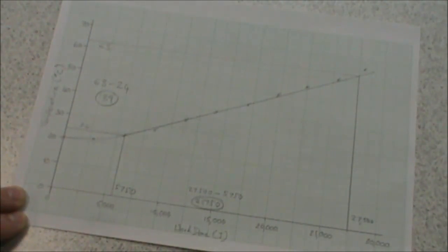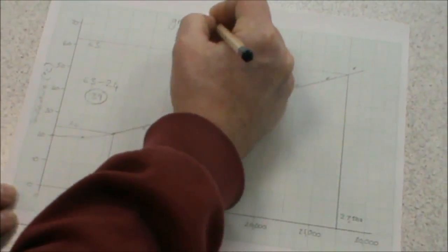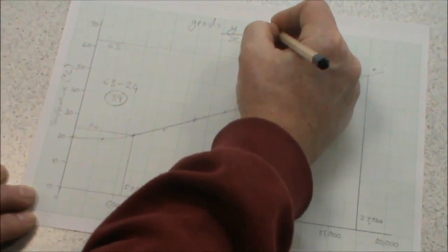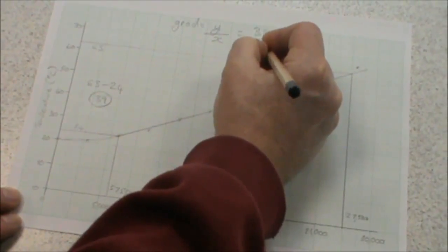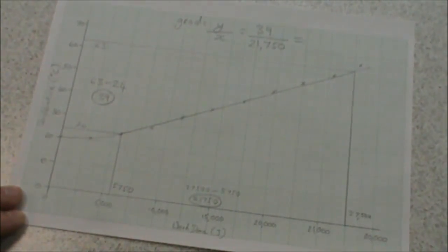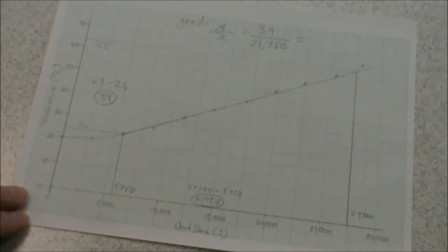To calculate the gradient, we do the y value divided by the x value. Which in our case is 39 divided by 21,750. Which gives us a value of 0.0018.